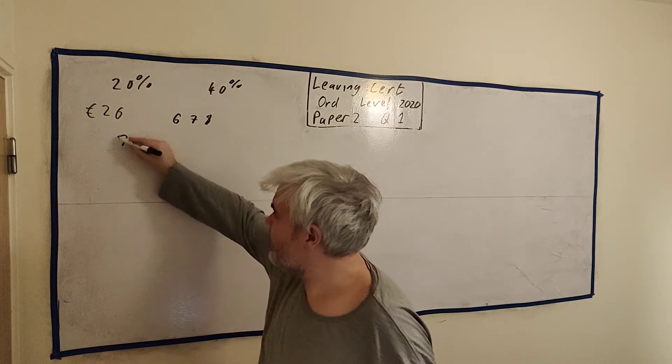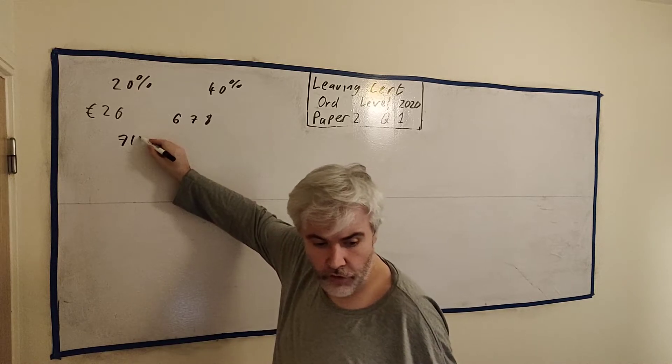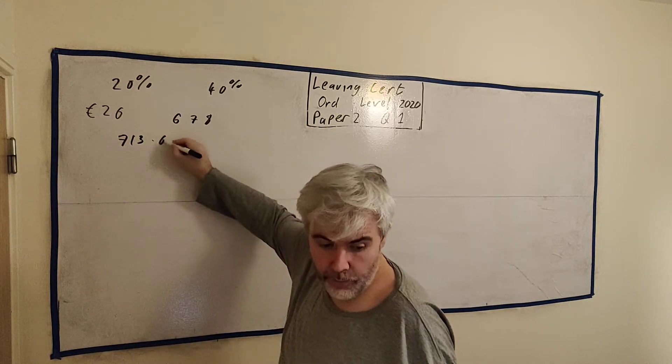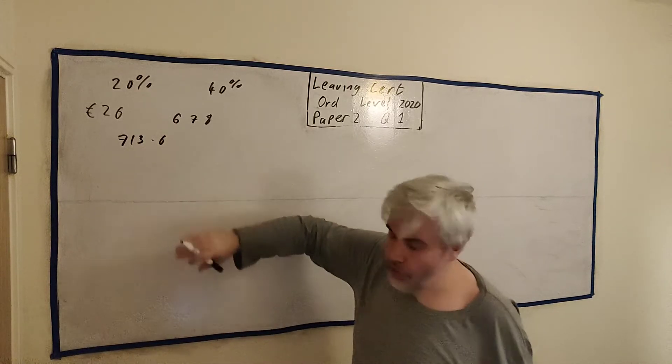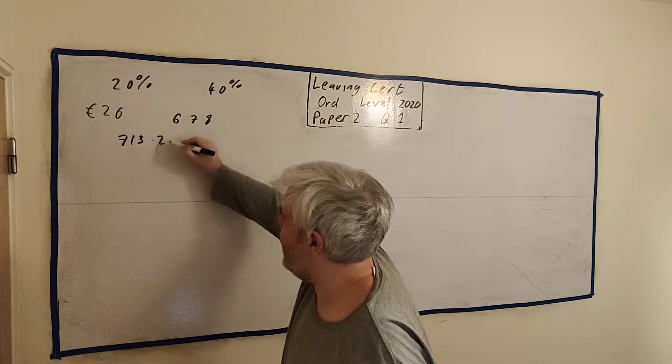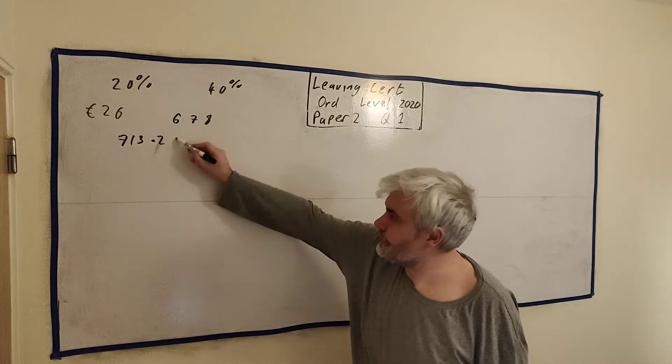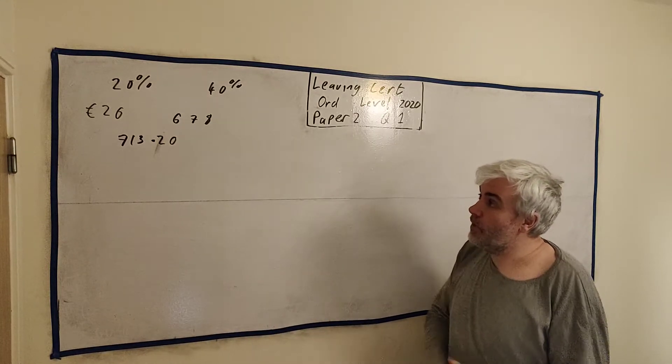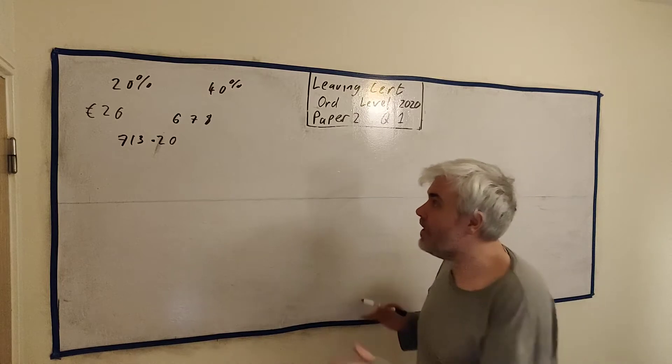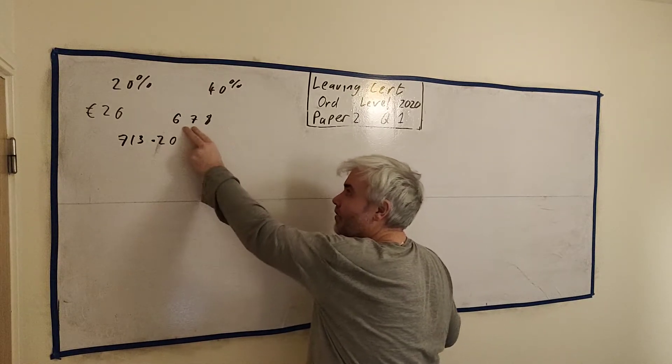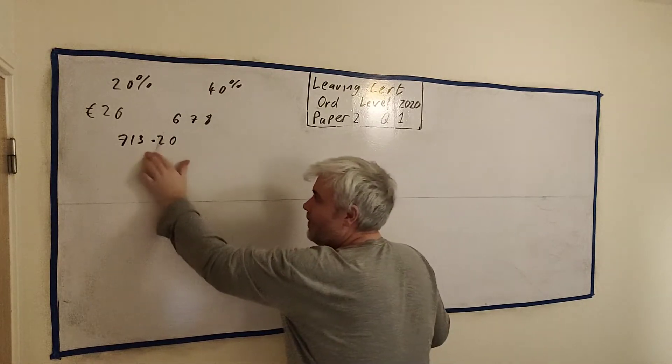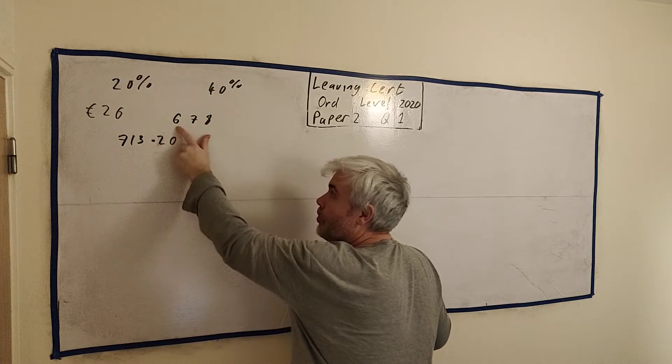Now that means any money you make under this, you only pay 20%. Any money over this, you have to pay 40%. So then they tell us, this is the second week here, he earns €713.20. Let's work out what tax he pays. He has to pay tax on this amount. Let's break this up. He's going to have to pay tax on €678 and then the rest.